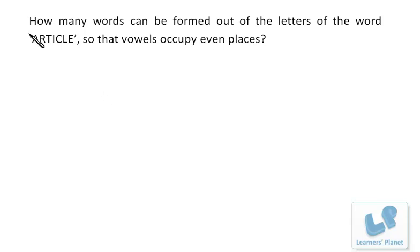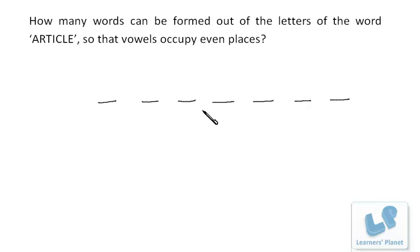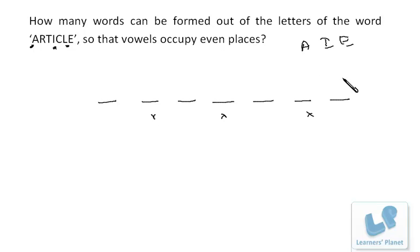How many words can be formed from the letters of the word ARTICLE such that vowels occupy even places? We have 7 letters: positions 1, 2, 3, 4, 5, 6, 7. There are 3 even places. The vowels in ARTICLE are A, I, and E. The remaining letters — consonants — are R, T, C, and L.